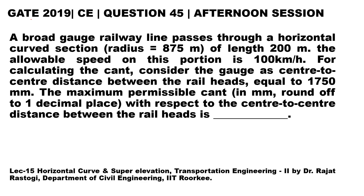Hello students, let's see another question which came in GATE 2019 civil engineering — this was question number 45 in the afternoon session. The question states that a broad gauge railway line passes through a horizontal curved section; radius is given as 875 meters and length is 200 meters. The allowable speed on this portion is 100 kilometers per hour.